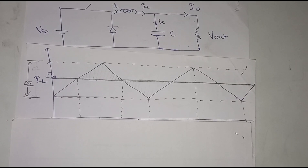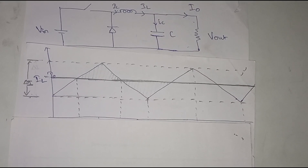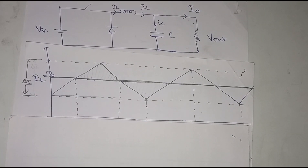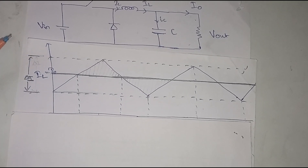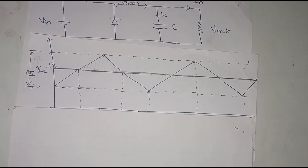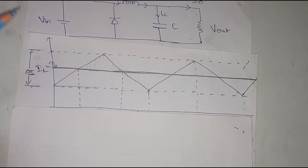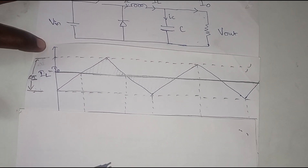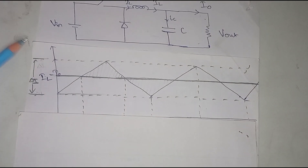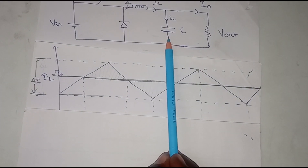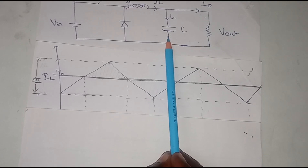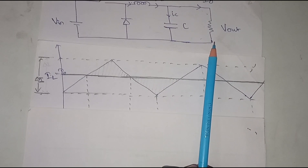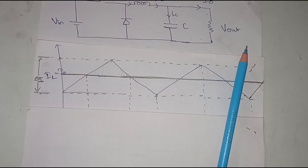In this video we are going to see how to calculate the minimum output capacitor required for the DC-DC converter. I am going to show this for the buck converter, but it is applicable for all other buck, buck-boost, or boost converters. Here is a buck converter schematic, and you can see that this is the output capacitor. I am not going to explain how the buck converter works as we have a separate video for that.